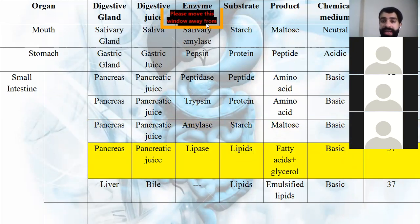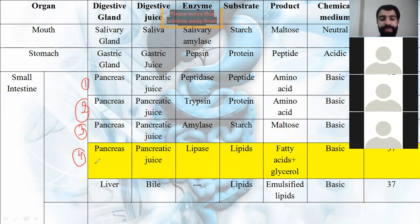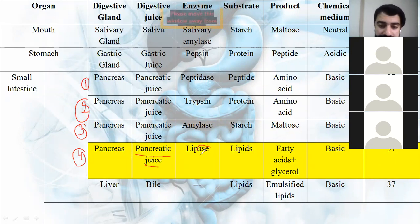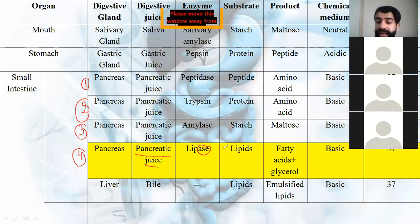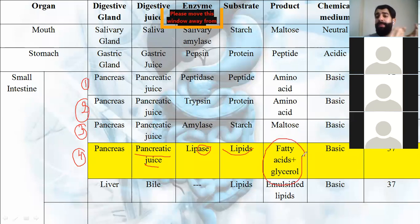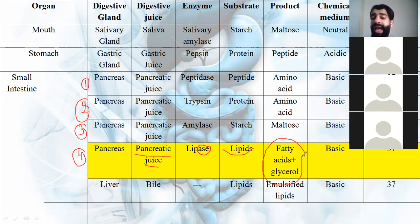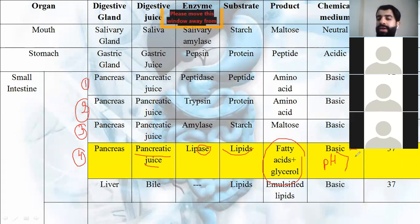The pancreas also secretes pancreatic juice containing a fourth enzyme: lipase. From its name, lipase works on lipids. Lipids have only a complex form and a simplest form — no intermediate. Lipase breaks lipids down into fatty acids and glycerol. The medium is basic — pH greater than 7 — and temperature is 37 degrees Celsius.